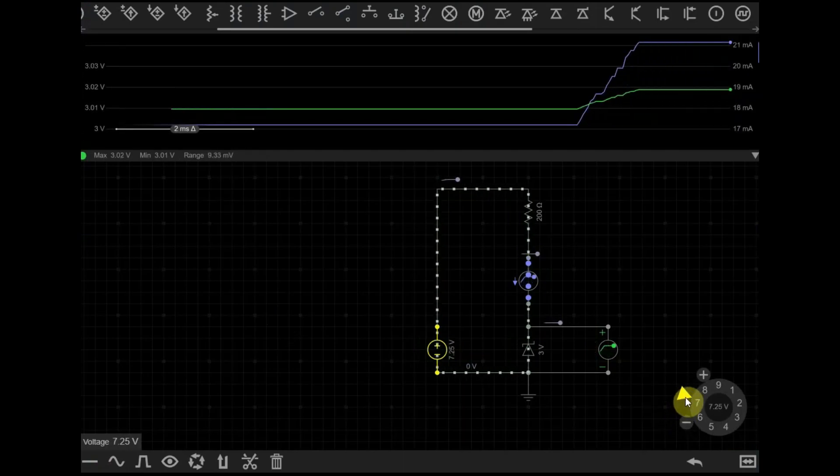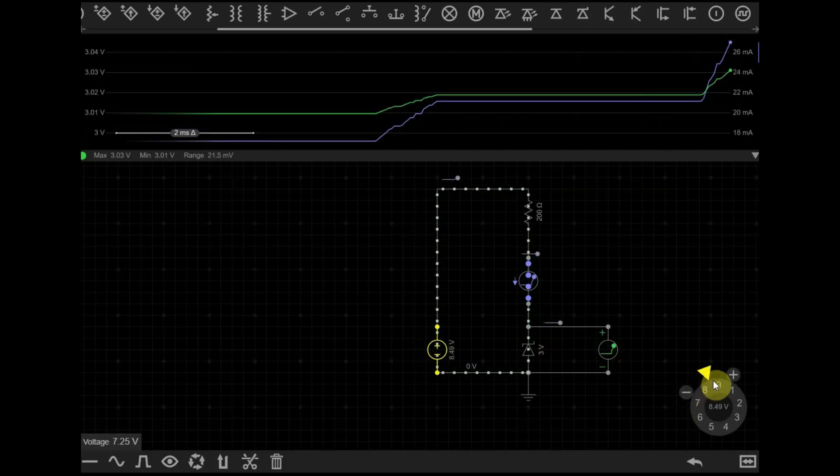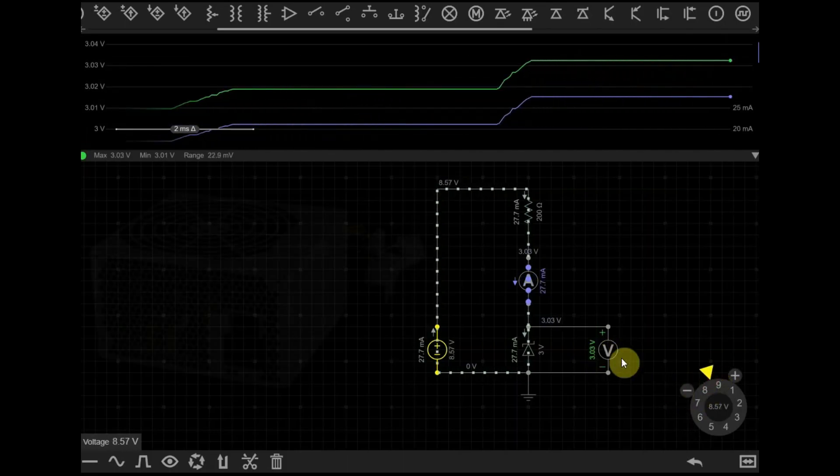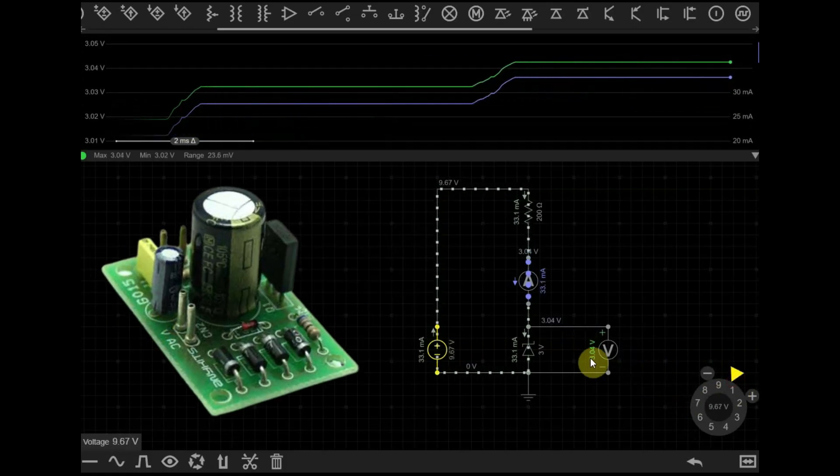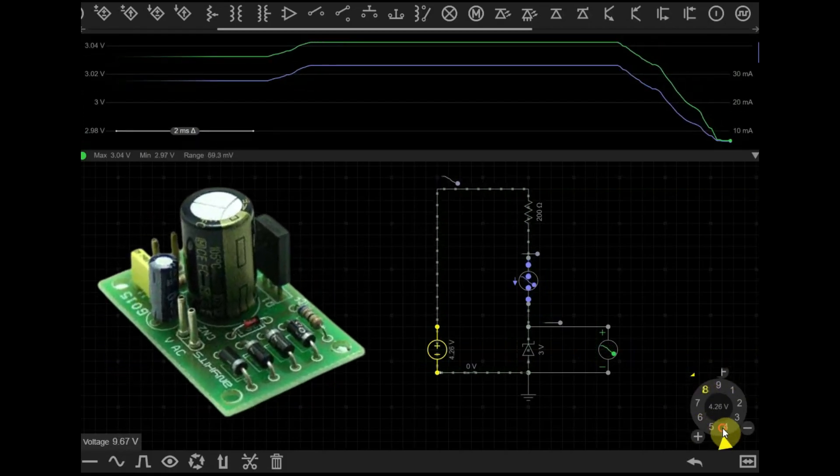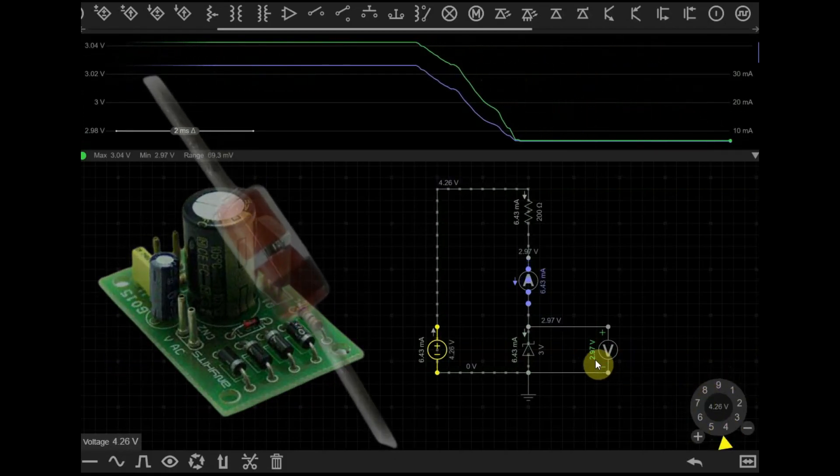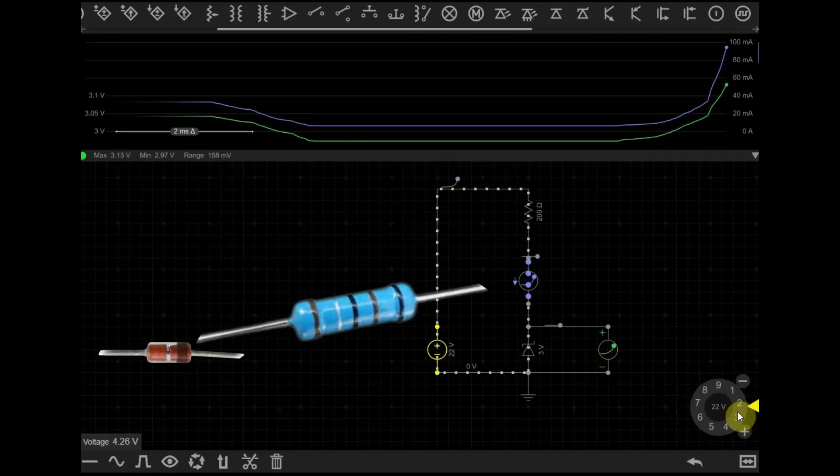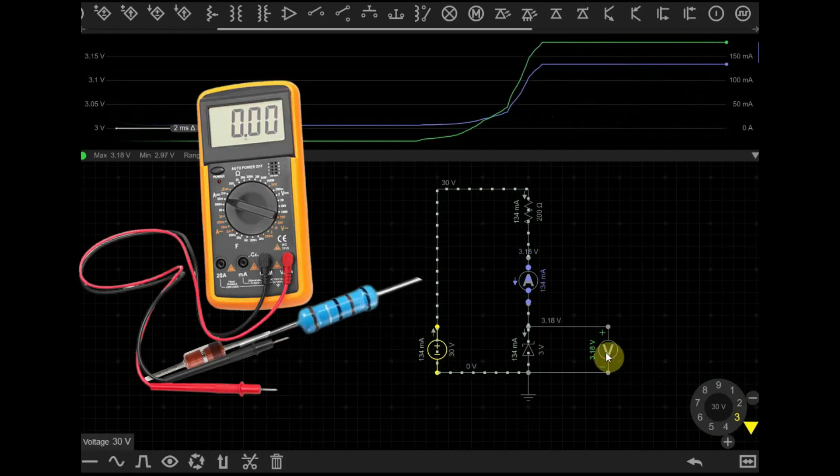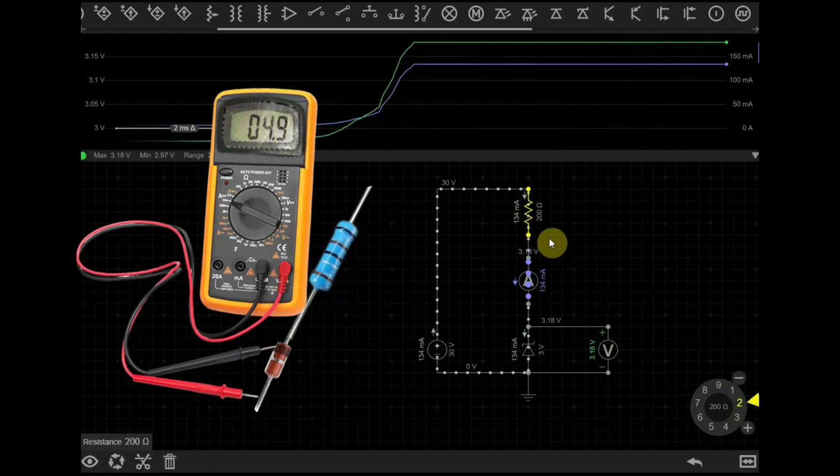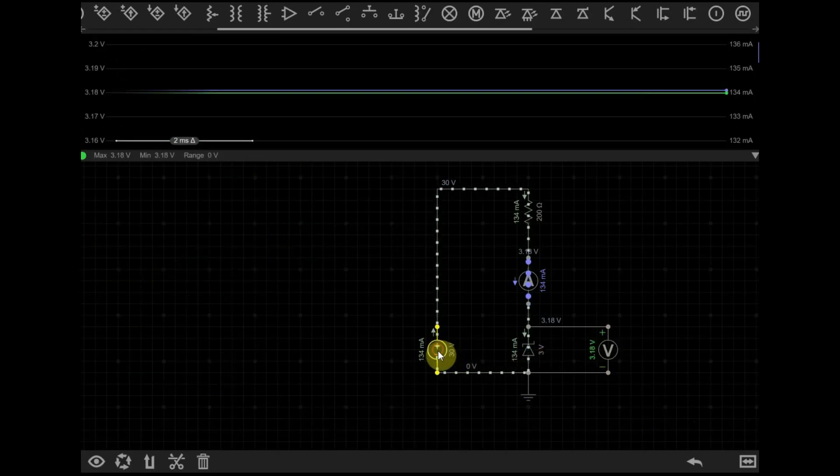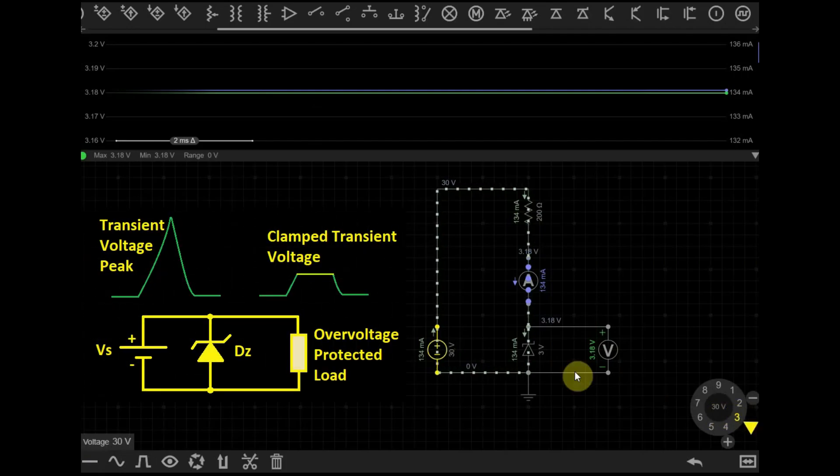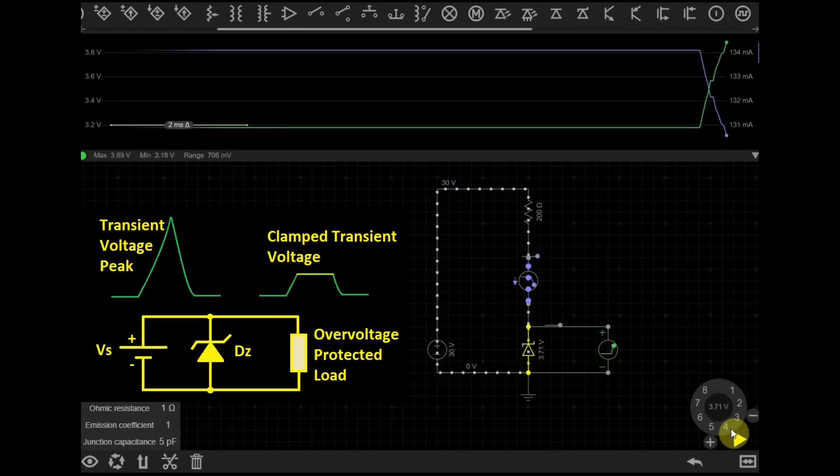The voltage regulation provided by Zener diodes is useful in many applications such as power supplies, voltage references and over voltage protection circuits. For example in a voltage regulator circuit, a Zener diode is used in conjunction with a series resistor to maintain a constant output voltage even when the input voltage or load current varies. In an over voltage protection circuit, a Zener diode is used to clamp the voltage across a circuit to a safe level in case of voltage spikes or transients.